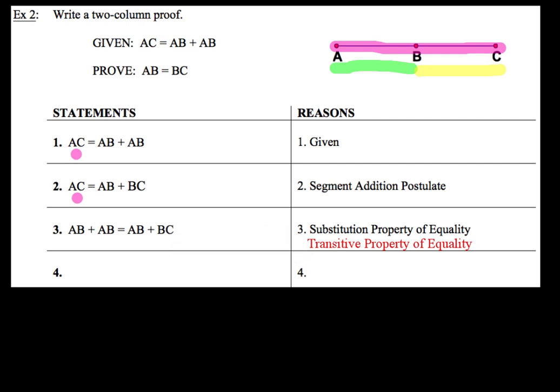Now the last thing that we want to do is take a look at statement number four but before we do that let's take a look at why we're going to end up with what we end up with. In statement number three each one of the sides of the equation has an AB in it so we're going to go ahead and write our last statement AB equals BC but the reason for that step is going to be the subtraction property of equality because in step three we're going to subtract AB on both sides and when we take that out the only thing we'll be left with is AB equals BC which is my statement number four. That's it for example two.